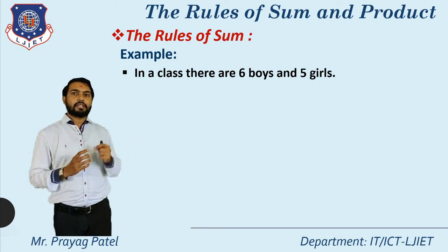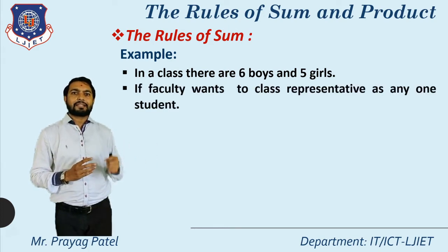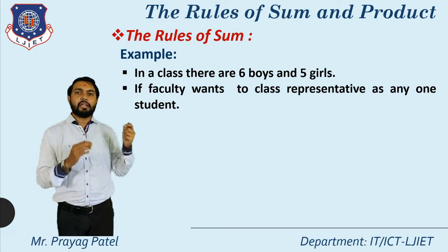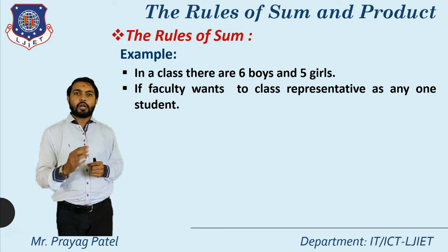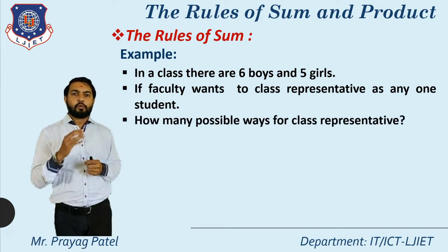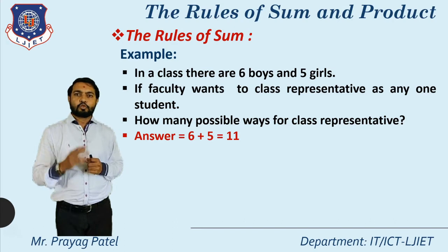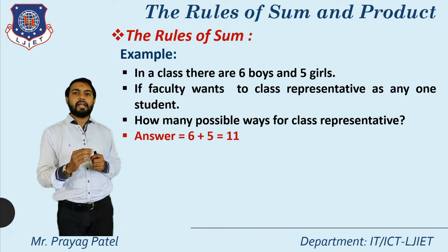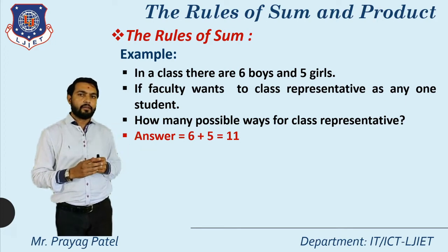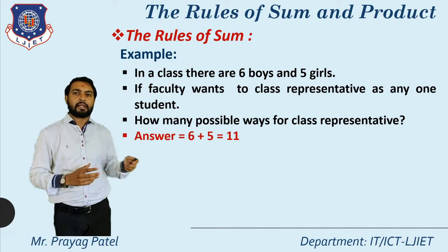The second example of the rule of sum: in a classroom there are six boys and five girls. If the faculty wants to select one student as class representative, what is the number of possible ways? We can say six boys plus five girls gives six plus five equal to eleven possibilities for selecting the class representative — from the first boy through the sixth boy, and the first girl through the fifth girl, giving eleven total possibilities.